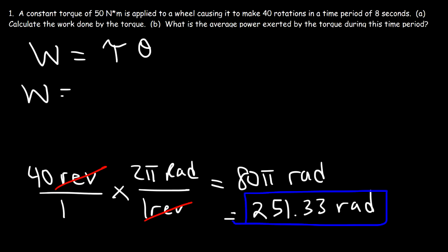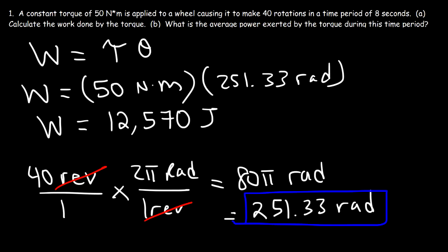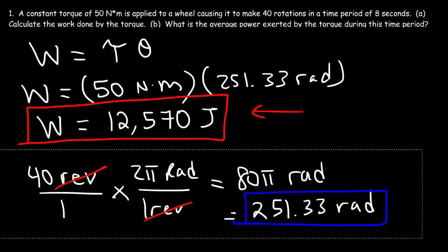Now we can calculate the work done by the torque. The torque is 50 Newton meters multiplied by 251.33 radians, so the work done is approximately 12,566.5 joules — I'll round it to 12,570 joules. Now we know how to calculate the work done by the torque. Next, what is the average power exerted by the torque?